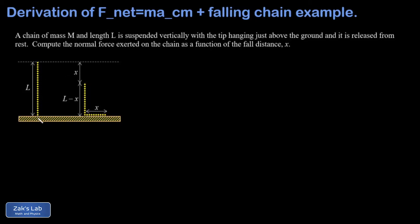I have a chain suspended vertically just above a table. It has a length l and a mass m, and it's released from rest. As it falls, the chain piles up on the table. I want to know the normal force exerted on the chain by the table as a function of the fall distance x. Importantly, the normal force is not just the amount required to hold up the piece already on the table - it must be greater, because part of it is stopping the links that are moving faster and faster as they slam into the table.